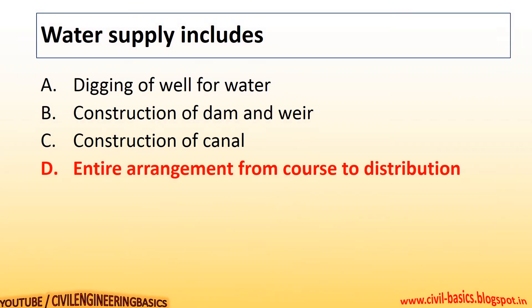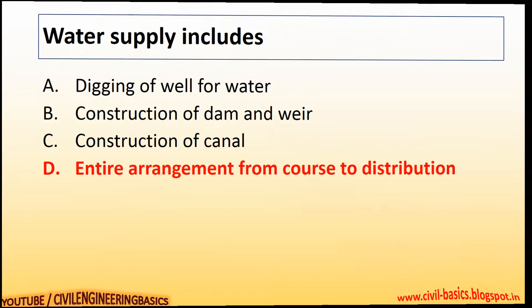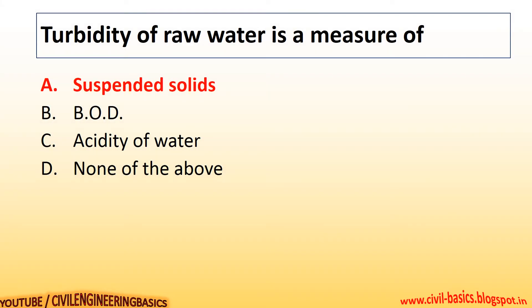Water supply includes the entire arrangement from source to distribution. Turbidity of raw water is a measure of suspended solids.